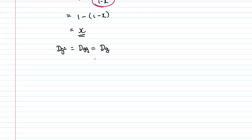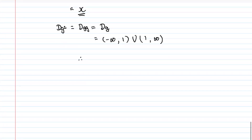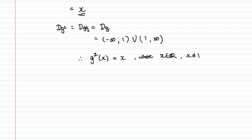Now for the domain of g²: the domain of g² is the domain of g(g), which is equivalent to the domain of g. That gives us (−∞, 1) ∪ (1, +∞). Therefore g²(x) = x for all real values of x, excluding x = 1.